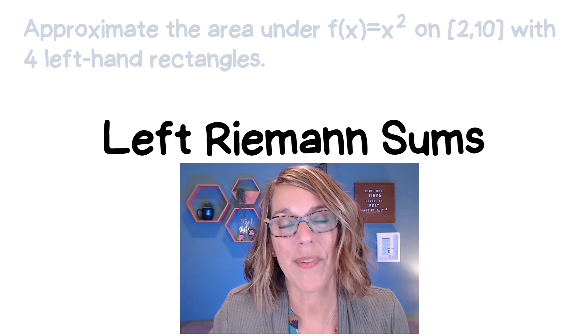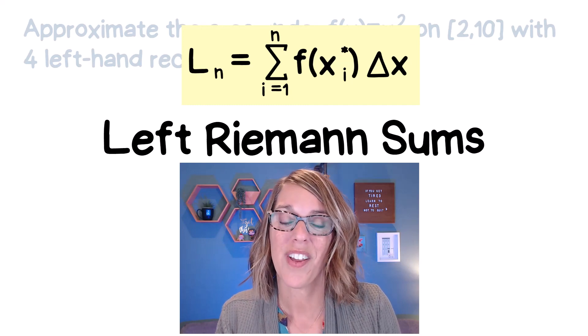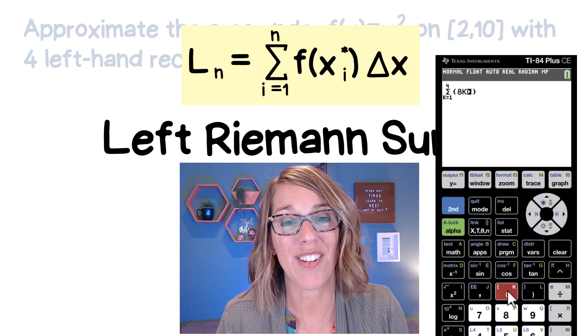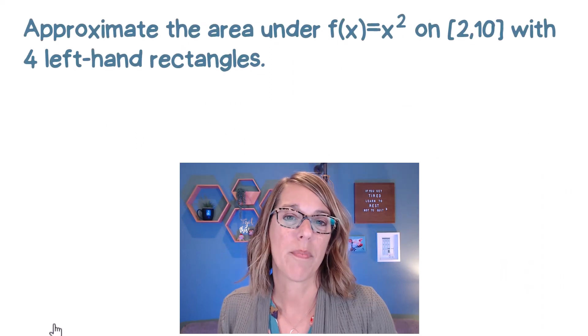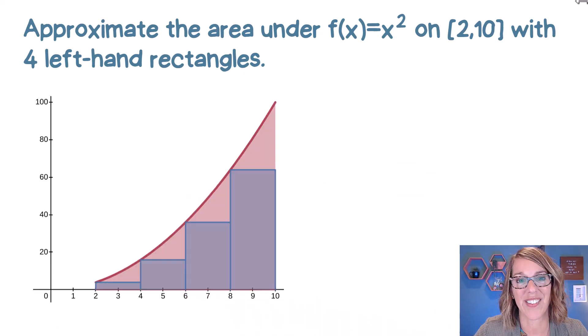Let's compute a left Riemann sum. I'm going to show you how to do this using the formula, but then I'm also going to show you a way to do this with your TI-84 calculator. We're going to approximate the area under x squared using four left-hand rectangles.